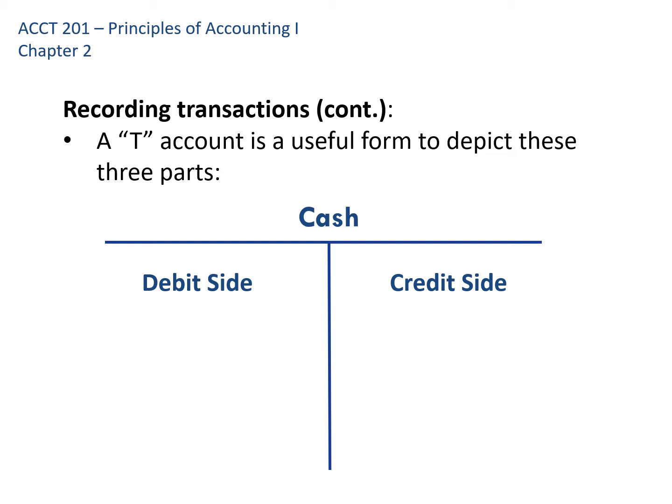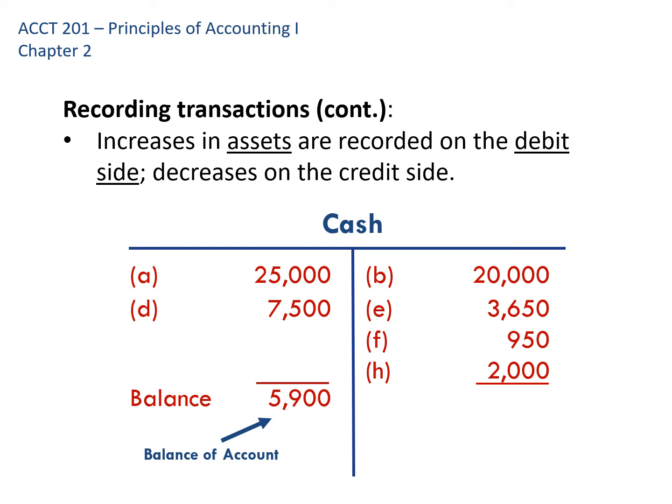There are rules about which side we use to record increases and decreases, and I'll go over those rules in three different ways. First, I'll just tell you the rules. Increases in assets are recorded on the debit side, and decreases are recorded on the credit side. For example, this company had two increases in cash — one for $25,000 and one for $7,500 — and four decreases in cash shown on the credit side. The net balance is a debit: $25,000 plus $7,500 minus the four credits equals $5,900 on the debit side. We refer to the side that records increases as the normal balance of that account, so cash has a normal debit balance.